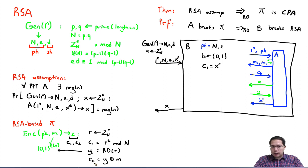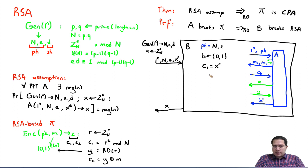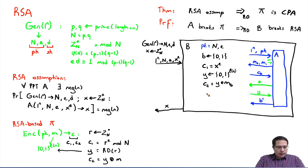We also need to simulate c2. For c2 we need the random oracle of r, which is x here. But we don't know x. Instead, we pick y randomly from the correct range {0,1}^ℓ (the length of the messages), and compute c2 = y XOR M_b. The ciphertext c_b has two parts: c1 and c2. This is what we send back.